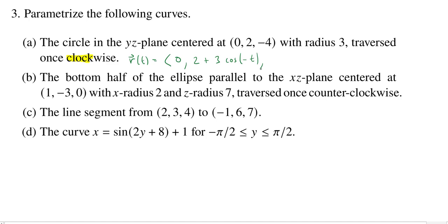Now let's jump over into the Z coordinate. So the center is at -4. So we'll put a -4 plus 3. And now we do the sine of, again, instead of T, we'll go negative T.